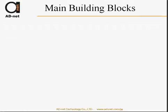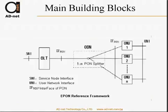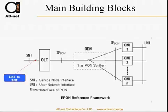Let's start with the main building blocks. What exactly are the GEPON building blocks? What does the GEPON network consist of? The GEPON network consists first of the Serial Node Interface, where you connect a voice network, your ISP network, or the CATV. If you offer triple play, then you can have interfaces with all three networks.